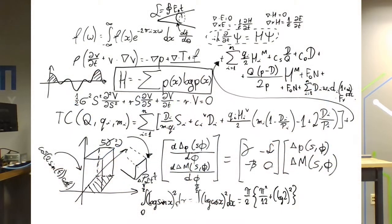Most early Unix developers were math nerds. When they went to school, they studied logic and engineering, and all of it required a lot of math. The early Unix developers were used to dealing with things like this. You may wish to limit the time you spend staring at this image.